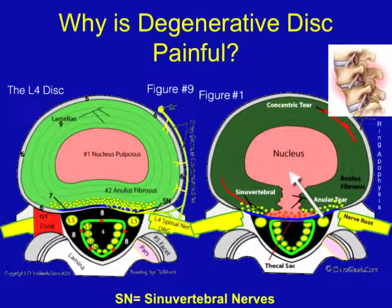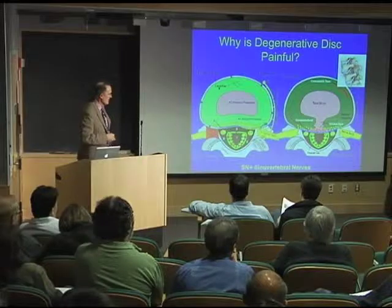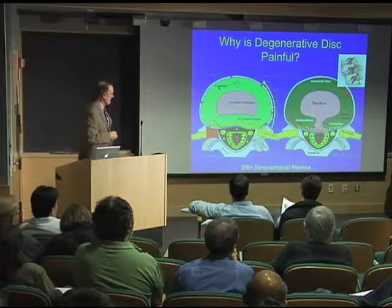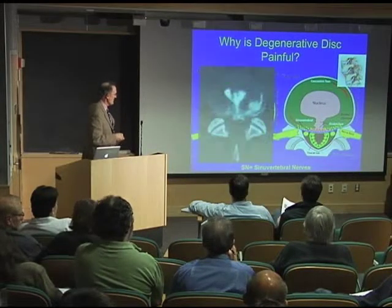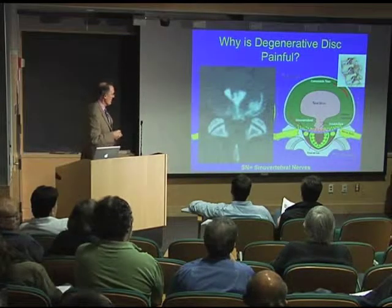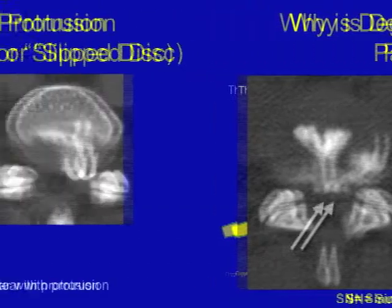So we have an annular tear with the nucleus coming out and bulging the nociceptive fibers, and this can cause pain. Here's an example of that with discography — we have contrast leaking out through tears and causing pain in the back of the disc.